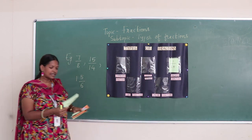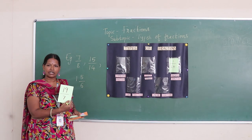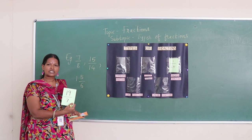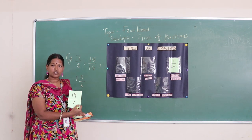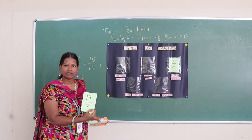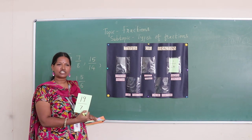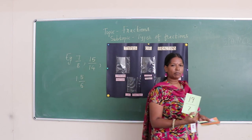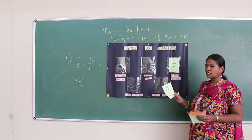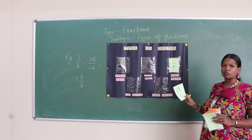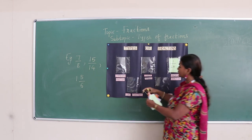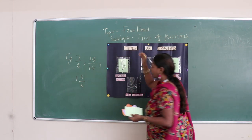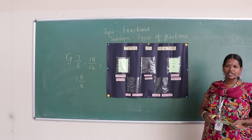Now I have this card: 19 upon 7. Here, 19 is the numerator, which is bigger than its denominator 7. This type of fraction is known as an improper fraction, where the value of the fraction is more than one whole. So I will put this in the pocket of improper fractions.